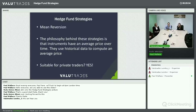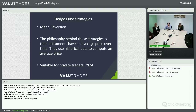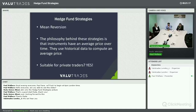The next strategy is mean reversion. The philosophy is that instruments have an average price over time, using historical data to compute that average. What does that mean in practice? Markets will always overshoot and undershoot, and invariably they will revert to a mean — what is deemed fair value. Everyone has their own definition of fair value, but you'll hear traders and hedge funds talk about mean reversion strategies. Is it suitable for private traders? Yes — I trade many mean reversion strategies myself alongside trend following.